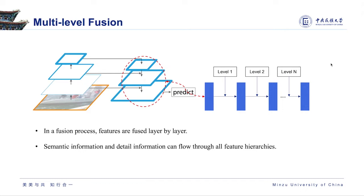Almost all semantic segmentation backbones output multi-scale feature maps. Some works contain multi-level fusion, where features are fused layer by layer. Detailed information can be progressively introduced into deeper parts level by level, enabling more delicate boundaries. In feature pyramid networks, semantic gaps between different level feature maps can be narrowed by top-down enrichment. However, top feature maps have been downsampled several times, causing serious loss of detailed information. Connections from low-level features play an essential role in recovering precise information from the bottom-up maps.